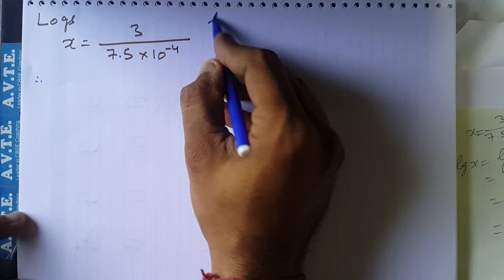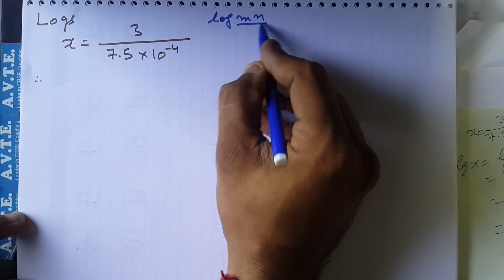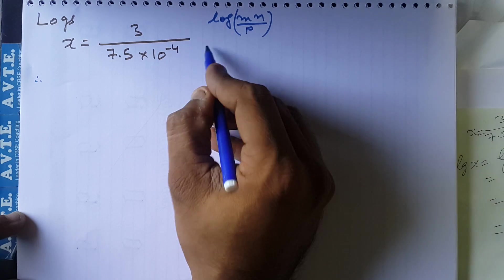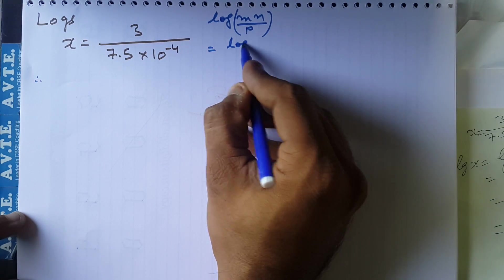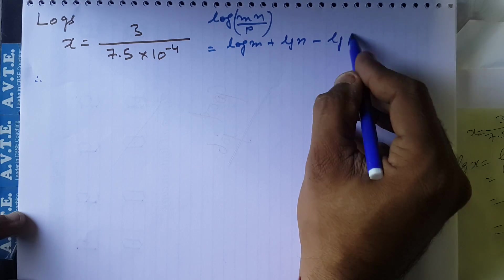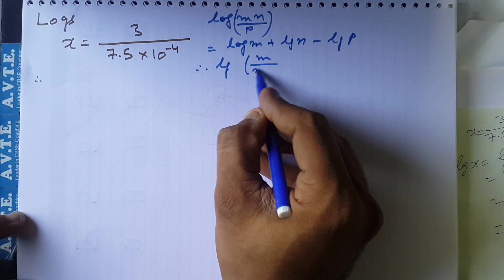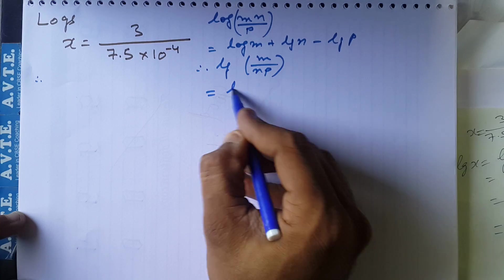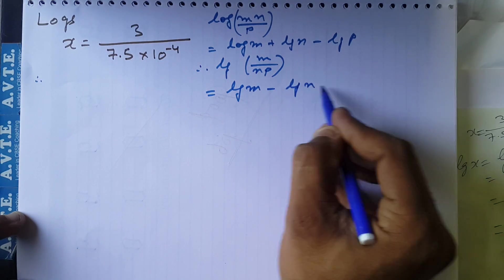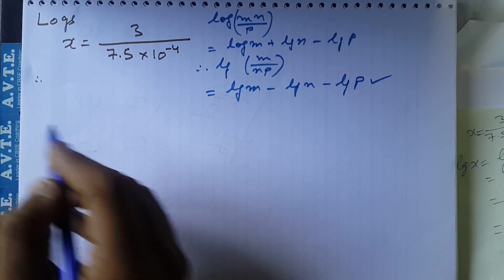First we apply the logs. Log mn upon p, what is that? Log m plus log n minus log p. Here is log m upon np. What is that? Log m minus log n minus log p. So this law we apply here.